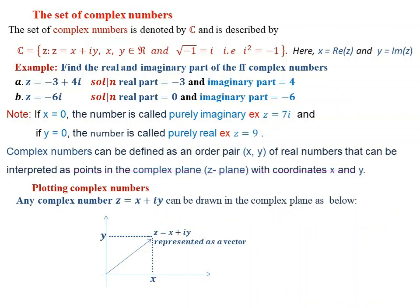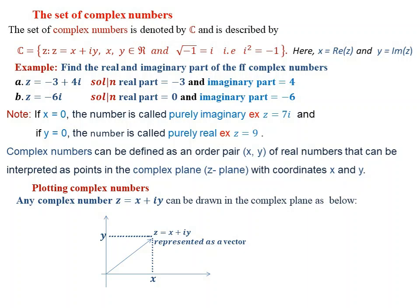The set of complex numbers is denoted and described by z such that z is equal to x plus iy, where x and y are elements of real numbers and the square root of minus 1 is equal to i. The real part of z is x and the imaginary part is y, with i being the imaginary unity.